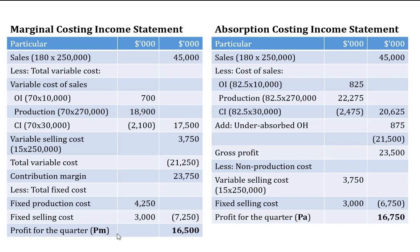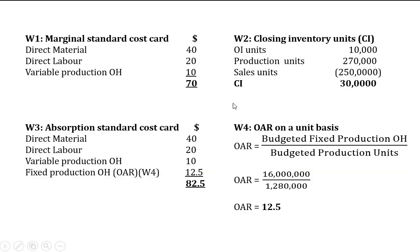Moving to the absorption costing income statement: sales are the same. The key difference is that the absorption costing system values inventory using both fixed and variable production cost components. The unit cost under absorption costing is therefore different, as shown in Working 3 — the absorption standard cost card. Direct material, direct labor, and variable production overhead are the same as marginal, but there is an addition of fixed production overheads, also called the overhead absorption rate (OAR).